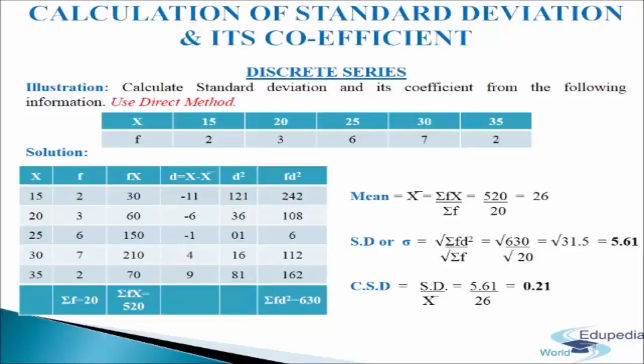In the last column we write fd square — we multiply frequency with d square. 2 into 121 gives 242. 3 into 36 gives 108. 6 into 1 gives 6. 7 into 16 gives 112. 2 into 81 gives 162. We add up these values and get sigma fd square equals 630.